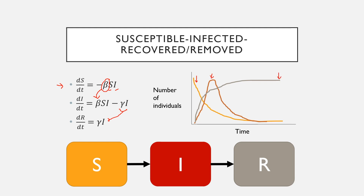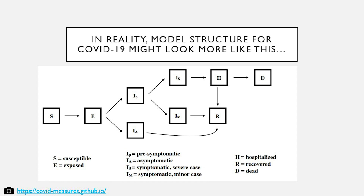This is obviously very simplistic. We don't have things factored in like births of hosts, deaths of hosts, or an incubation or exposed period for hosts. So for looking at real diseases like COVID-19, this would be a more complex system of equations.